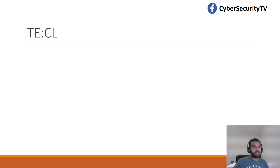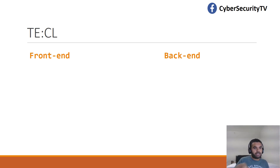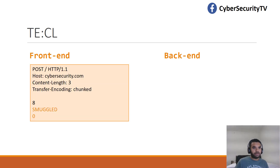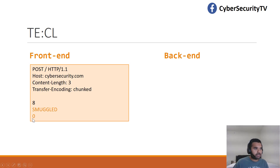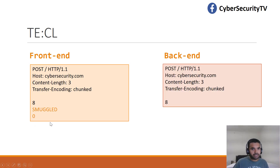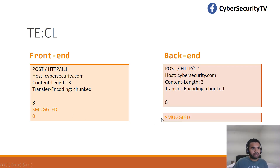The third method is Transfer-Encoding and Content-Length — the reverse of the previous one. Here we assume the front end prioritizes Transfer-Encoding. It sees the character 8, takes the smuggled body as the request, and terminates at zero. Meanwhile, the back end uses Content-Length — counting two line spaces as one character each, with the third character being 8, giving a Content-Length of 3 — and considers the rest as a new request. That's another possible way to exploit this vulnerability.